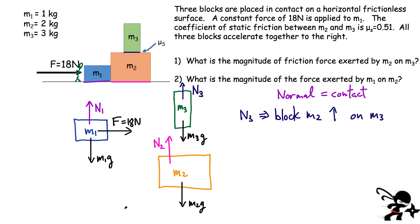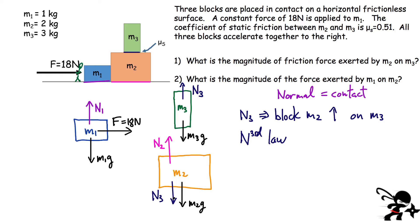This is where Newton's third law is super important. Every action has an equal and opposite reaction. So if block M2 is pushing up on block M3, there must be an equal and opposite force — N3 — on a different object. That means M3 is pushing down on M2. These are action-reaction pairs.